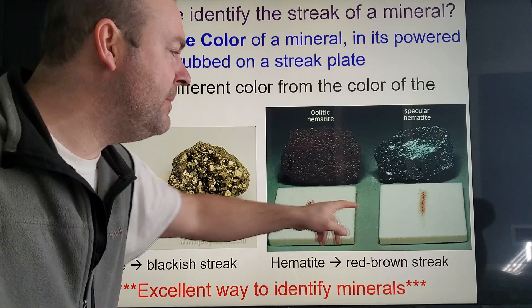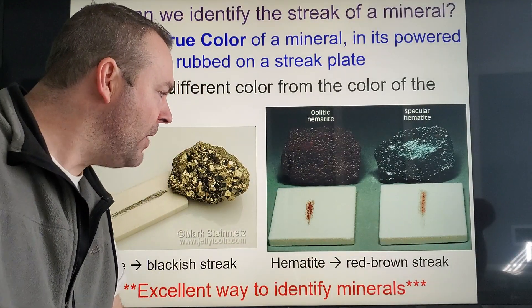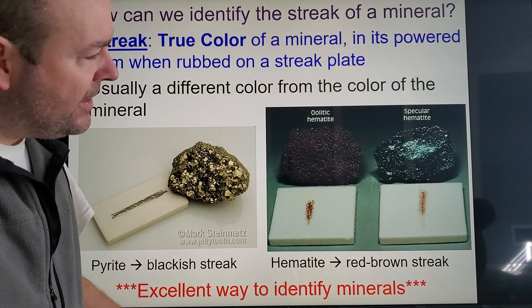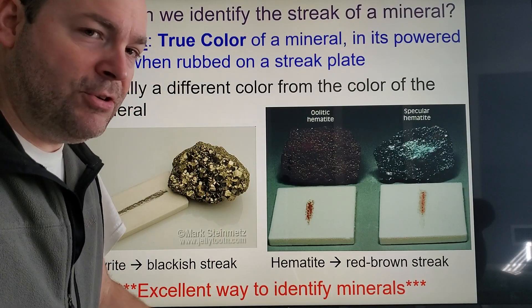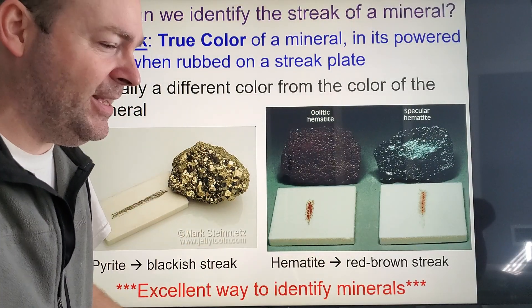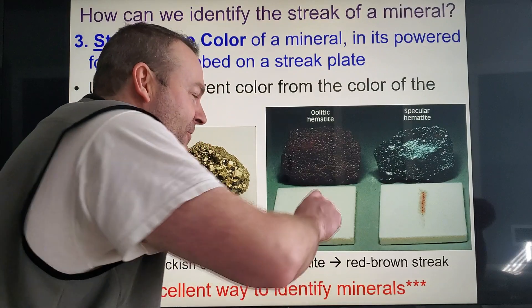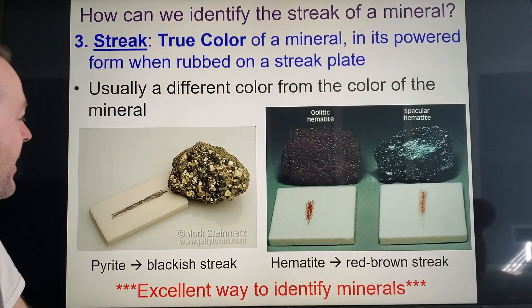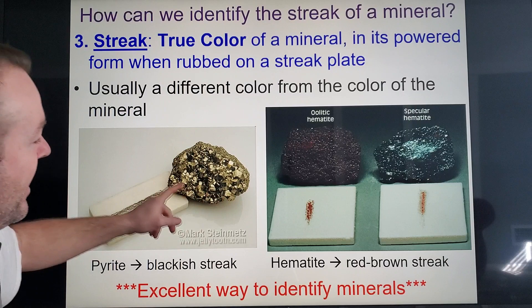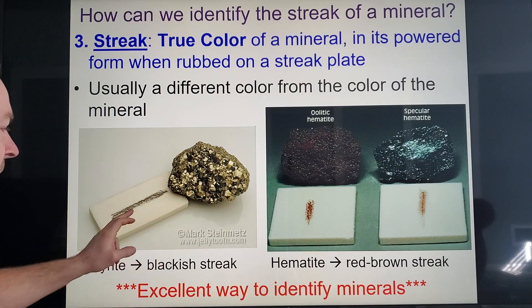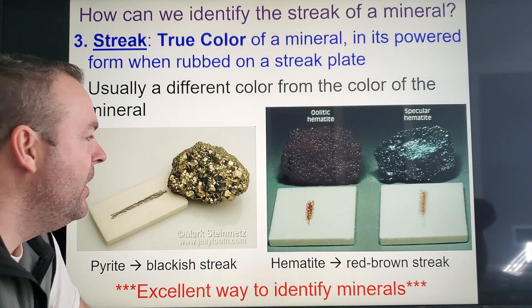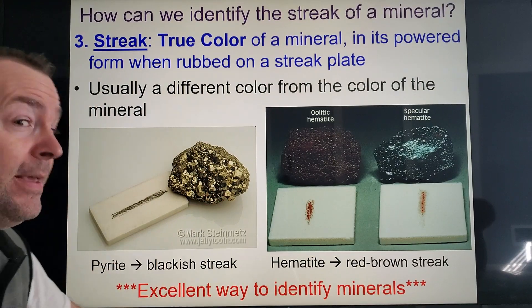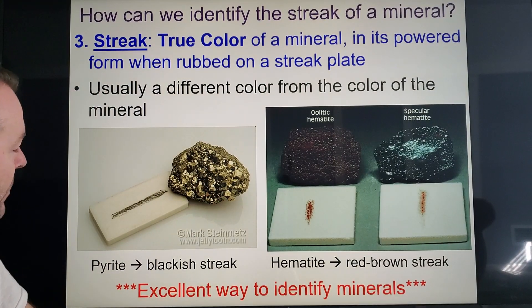You'll notice these two minerals are the same mineral but have different outside colors — they have the same inside color. That is a streak plate — after you rub the mineral on it, it leaves that powder behind. Look at pyrite: it's gold on the outside, but it has more of a black streak. If this were real gold and you streaked it, it would leave a gold streak.